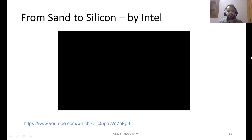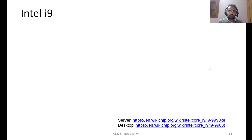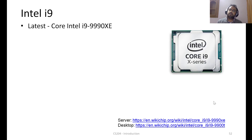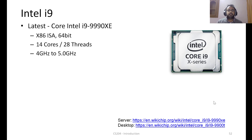Here is an example from Intel. The latest product was the Intel i9 9990XC processor chip. It is primarily based on the x86 ISA (Instruction Set Architecture) and can work with 64 bits at a time. Internally it has 14 cores, which can be interpreted as 28 hardware threads — meaning at any given moment, 28 different threads or programs can run simultaneously.